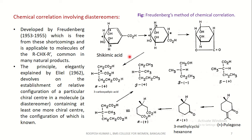The principle, elegantly explained by Auwers and Grob, devolves on the establishment of relative configuration of a particular chiral center in a molecule that is a diastereomer containing at least one more chiral center — that is, a molecule which contains more than one chiral center. The method is illustrated using the known absolute configuration of shikimic acid and dehydroshikimic acid.